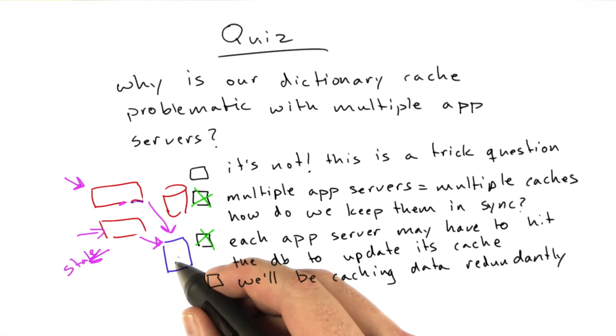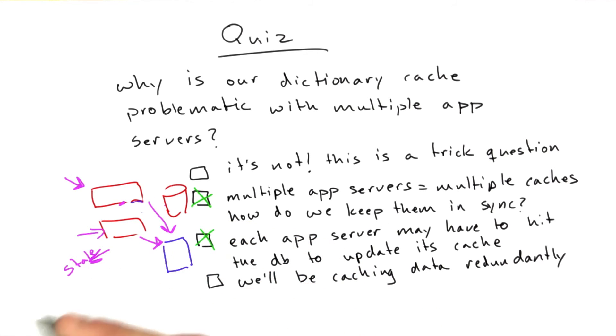And there's technology designed specifically to solve this problem, which is to be fast and used as a cache, which is different from a database which is designed to run complex queries on huge amounts of data. This piece of technology is called Memcached, and we're going to be spending basically the rest of this lecture learning how to use Memcached.